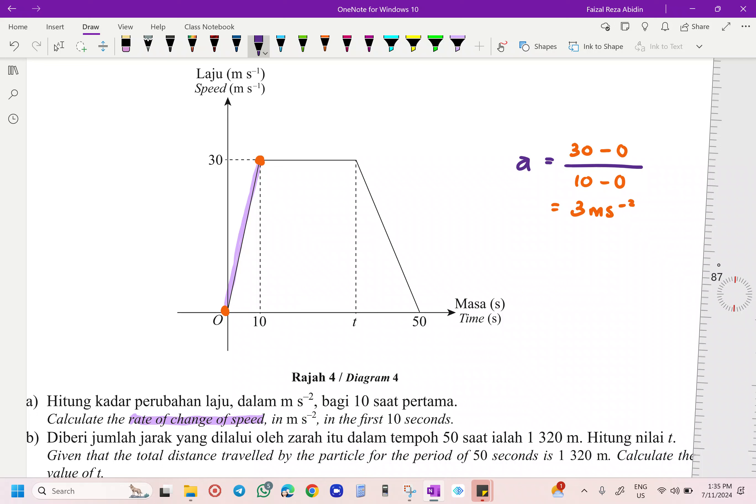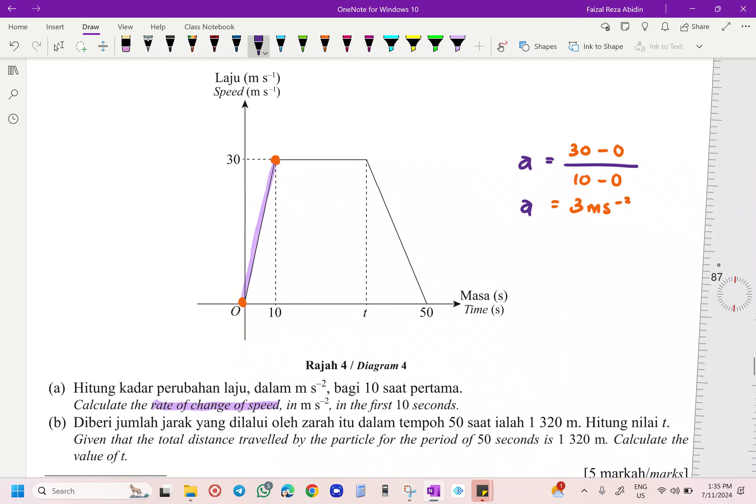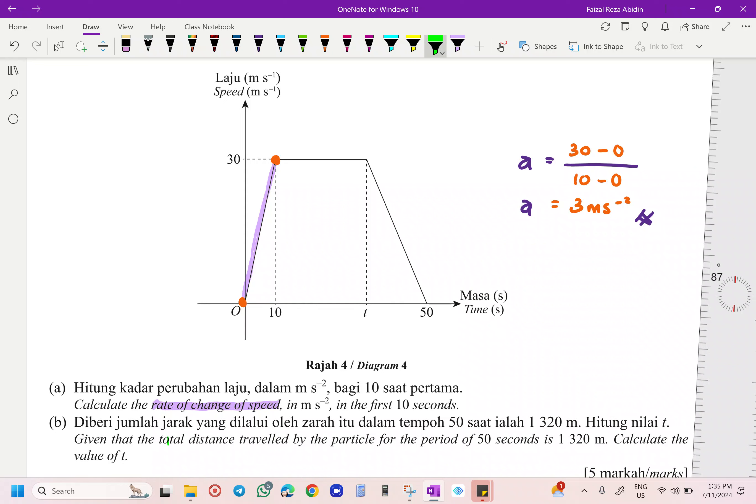That's going to be for your acceleration, the rate of change of speed. Okay, next one. Given that the total distance. How did we get our total distance? That means you have to find the area under the graph. Yes.